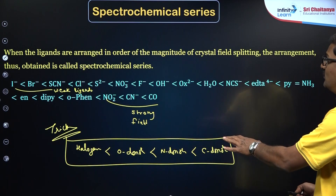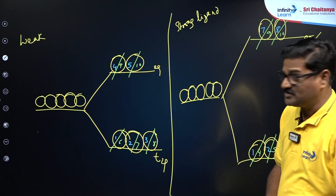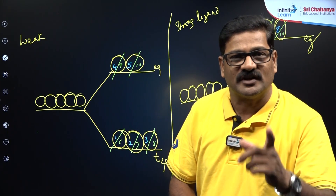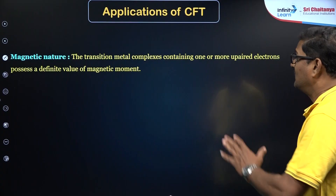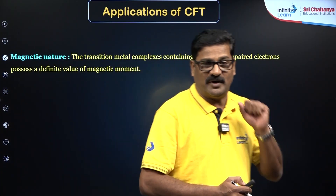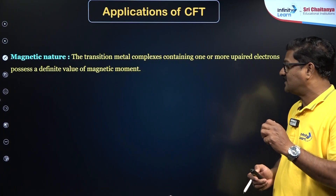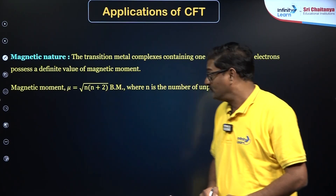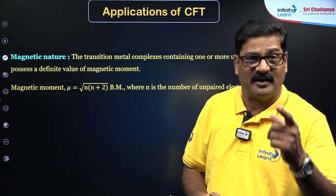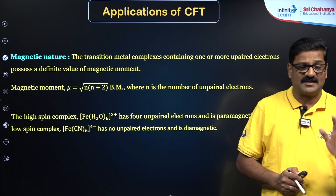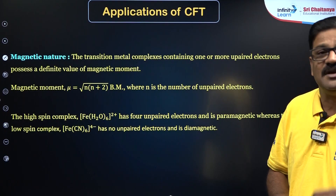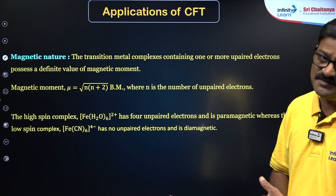This is how we write electronic configurations in the presence of weak or strong ligands — an application of crystal field splitting theory. The magnetic nature of the complex can be explained using the formula μ = √(n(n+2)) Bohr magnetons, where n is the number of unpaired electrons in the CFT orbital configuration. When n = 0, it is diamagnetic; when n ≠ 0, it is paramagnetic. For example, the high-spin complex [Fe(H₂O)₆]²⁺ has 4 unpaired electrons and is paramagnetic, while the low-spin complex [Fe(CN)₆]⁴⁻ has 0 unpaired electrons and is diamagnetic. Water is a weak ligand according to CFT.